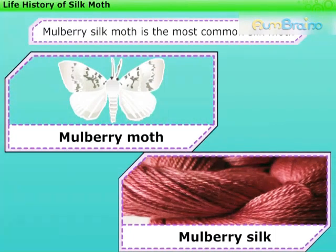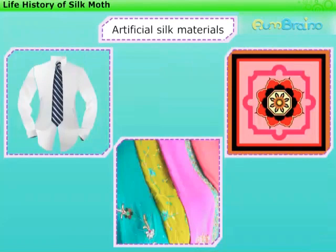The silk fiber from the cocoon of this moth is soft, lustrous, and elastic, which is dyed into beautiful colors. We also find different types of artificial silk materials in the market, which are cheaper than pure silk.